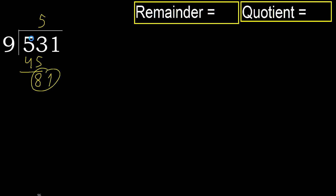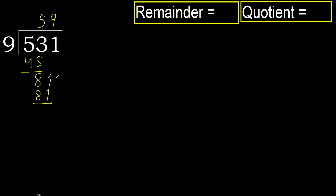81. 9 multiplied by 9 is 81, which is not greater. Subtract. Next — that is no remainder, therefore finish.